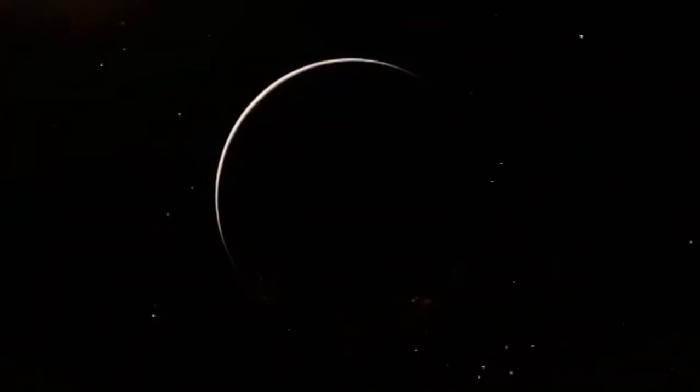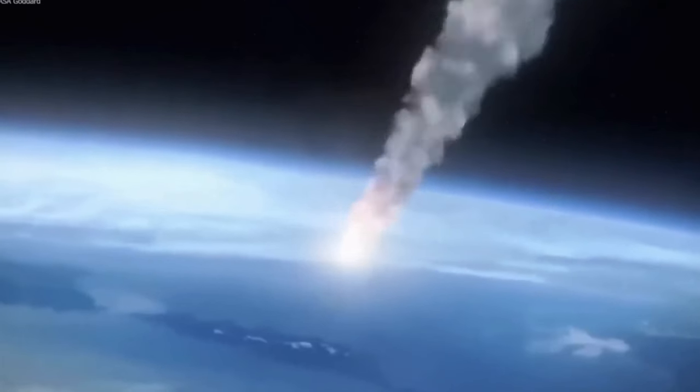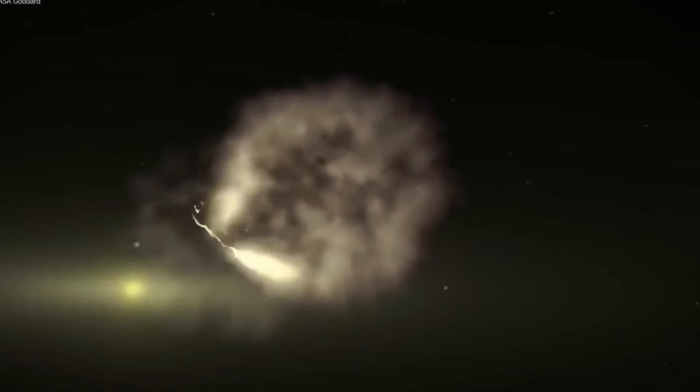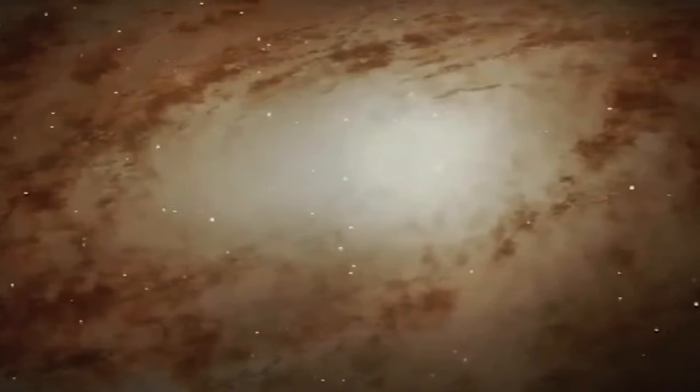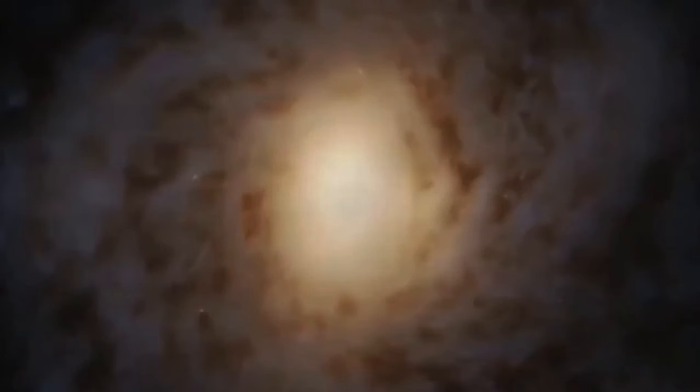As the first known interstellar object, it provided valuable insights into the nature of other planetary systems. Its peculiar shape and lack of a tail intrigued scientists, leading to various hypotheses about its composition and origins. Oumuamua's trajectory, propelled by a gravity boost from the Sun, took it on a hyperbolic path away from our solar system. Although Oumuamua's true nature remains uncertain, its fleeting visit left us with more questions than answers about the fascinating world of interstellar objects. But we need to understand what this object is before Oumuamua collides with our planet, now we will look at the best theories to explain what Oumuamua is.